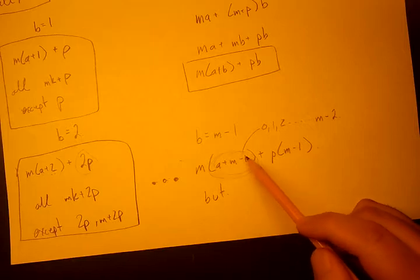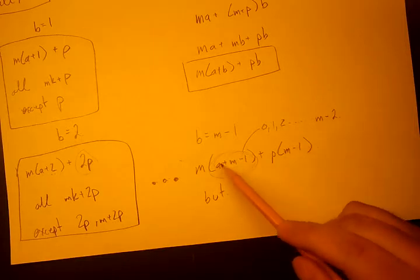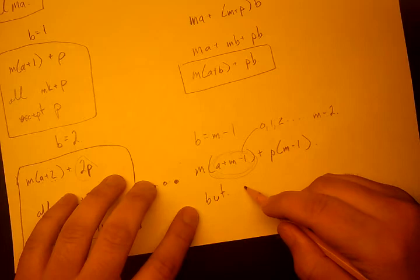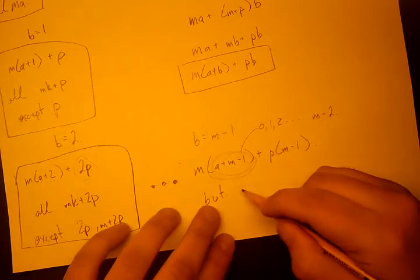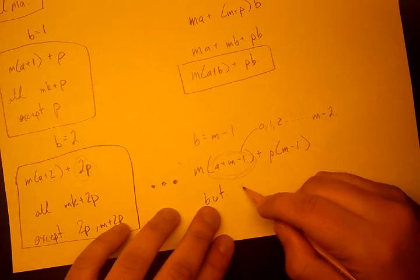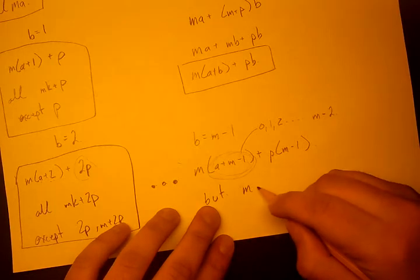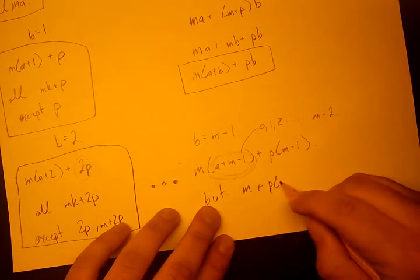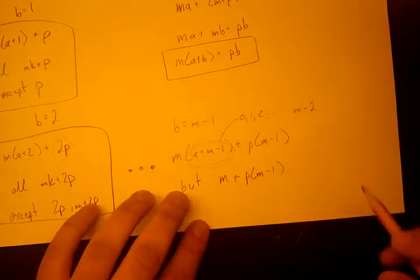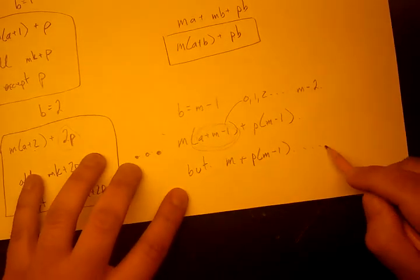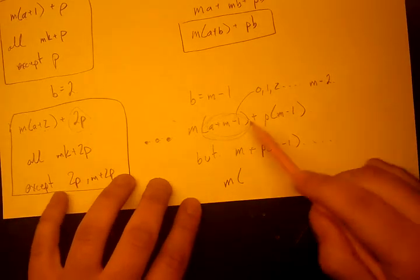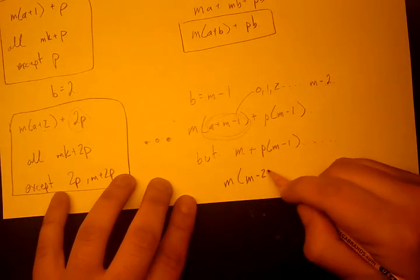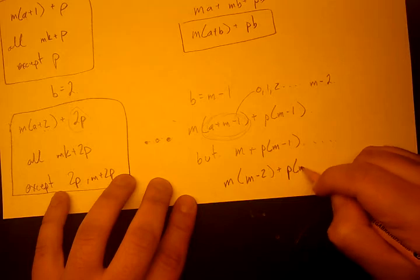So we can form m minus one, but we can't let it be m minus two. So, but when it's zero, we can't form m + p(m - 1), dot dot dot. And the largest value you can form is m(m - 2) + p(m - 1).